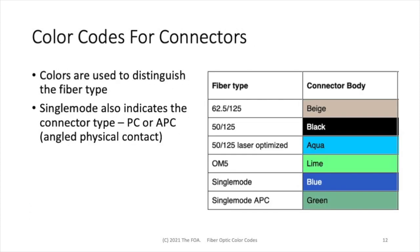There are also color codes for connectors. The colors are used to distinguish the fiber type inside the cable that's terminated with this connector. So if you see a beige connector, it's typically 62.5/125 multimode. Black is 50/125. Aqua is 50/125 laser-optimized. Lime green is OM5 wideband fiber.